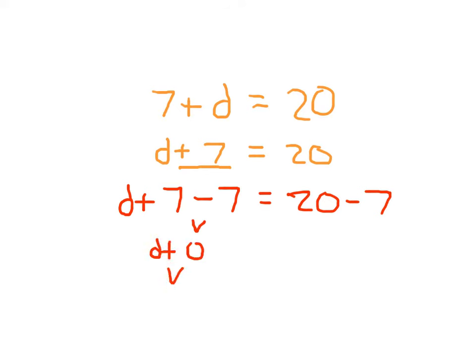So we end up with D plus 0, which just gives us D. And D equals 20 minus 7, which is 13. Looking back at that original equation again, 7 plus 13, does it equal 20? Yes, it does.